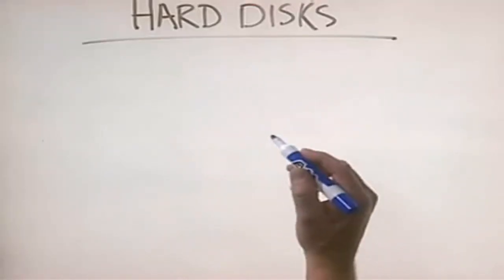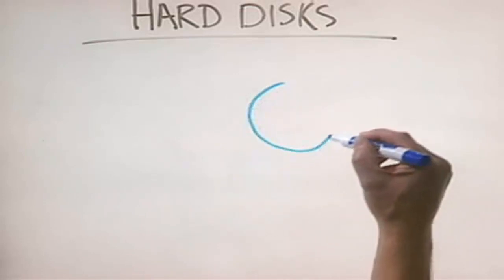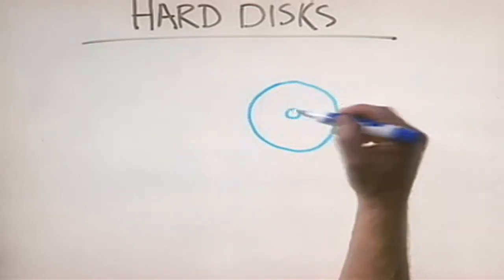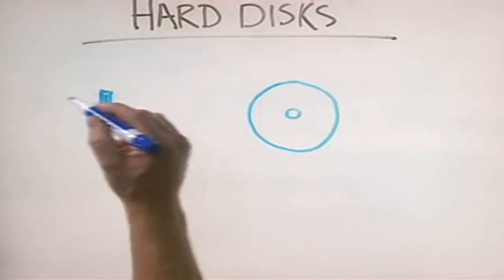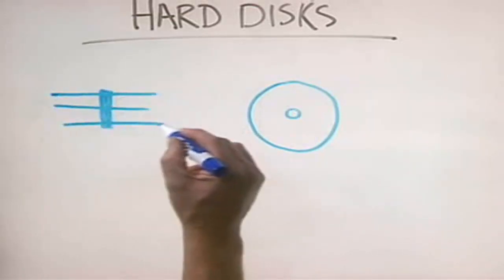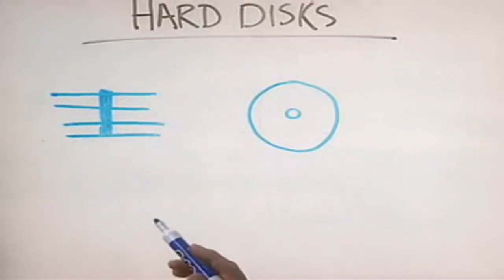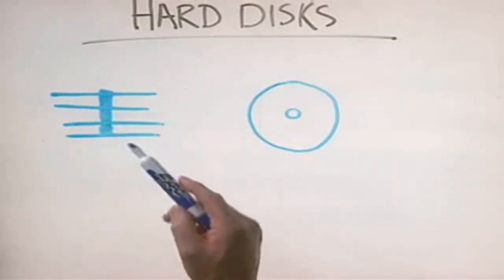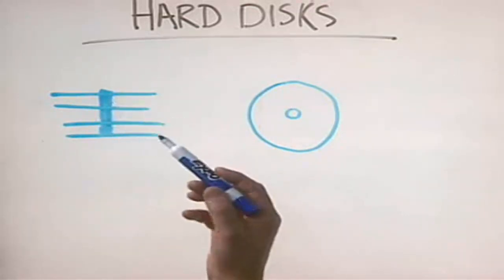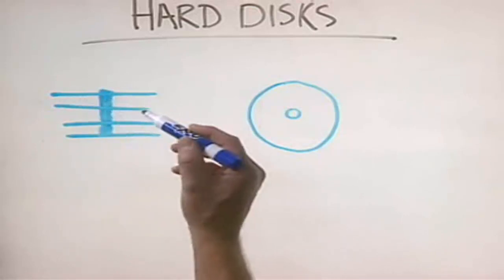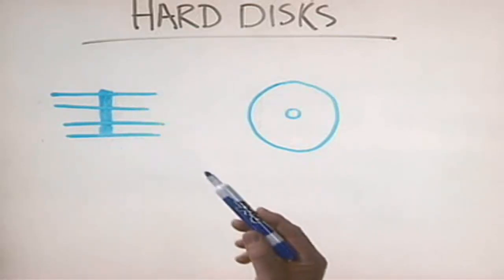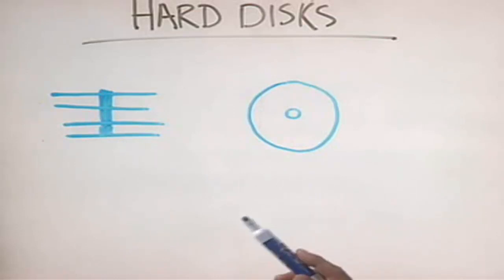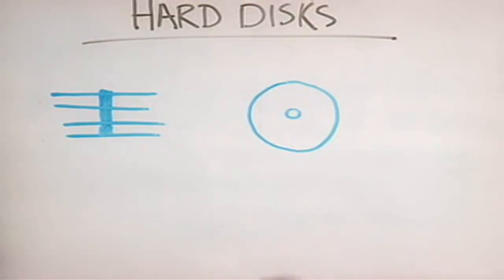The key component within any hard disk drive are the platters. Within a hard disk drive are stacks of platters. The number of platters depends on the drive — very old drives may have had one or two, while modern ones have four or more. These platters are made out of aluminum and coated with a magnetic surface material, polished to the point where it is extremely smooth — mirror-like.